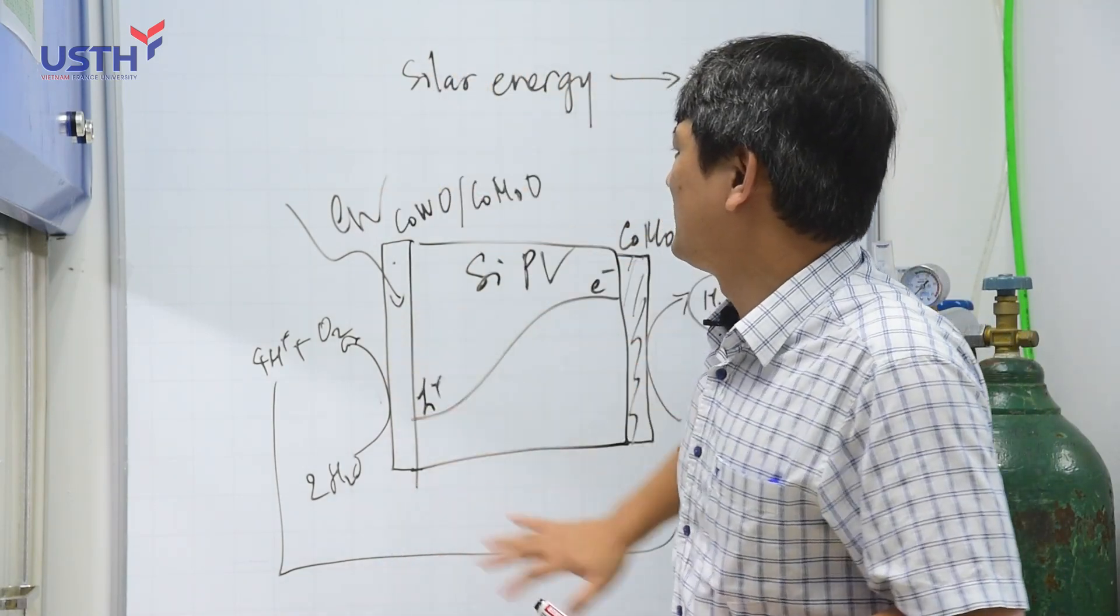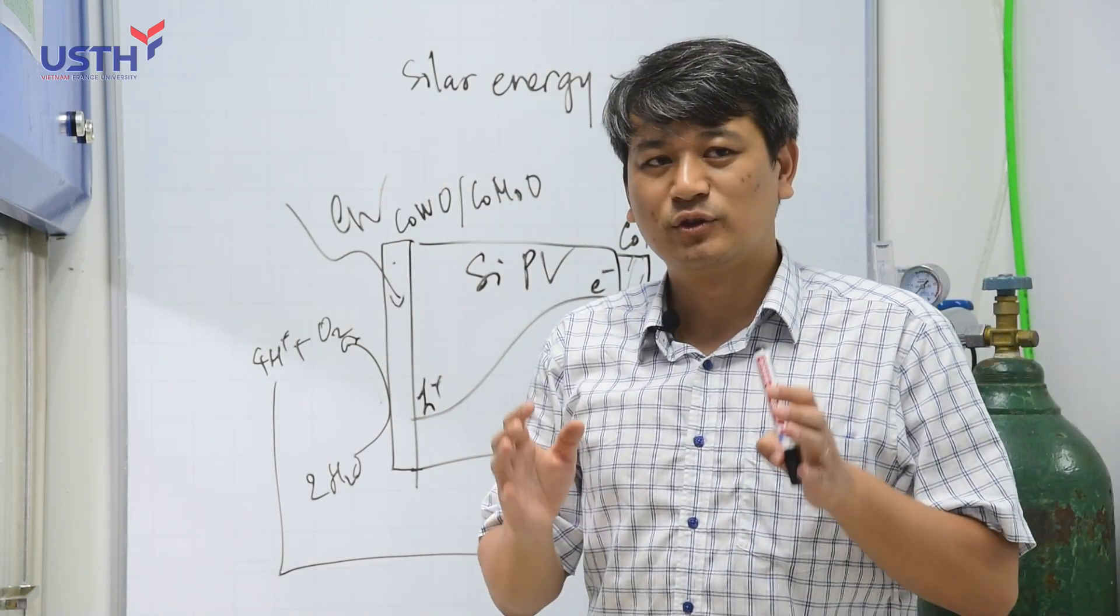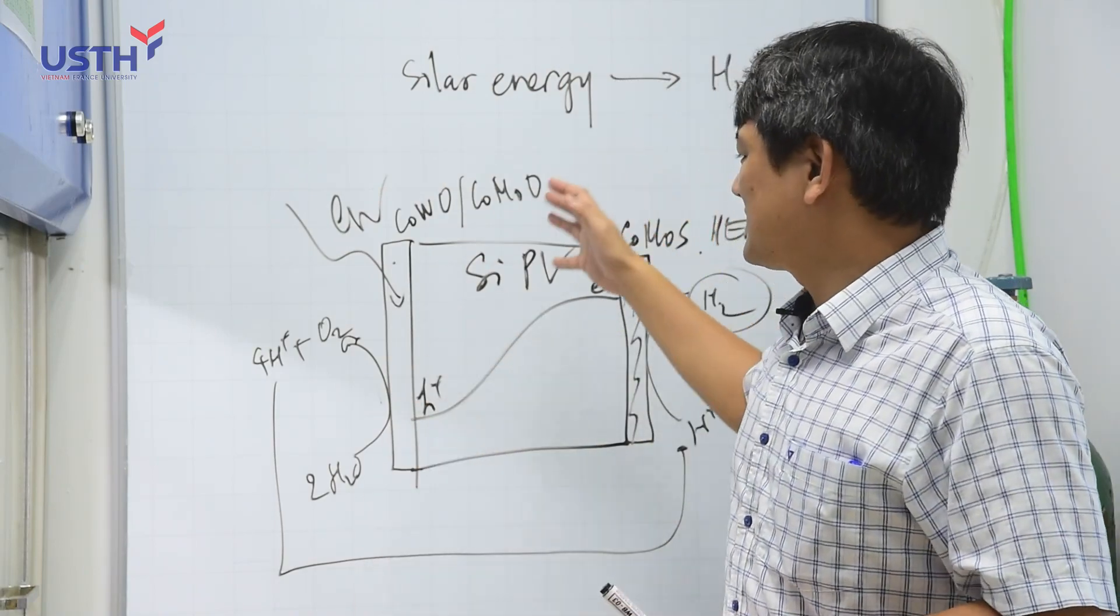So, by this solution, we can imagine to use a photovoltaic PV and this artificial leaf.